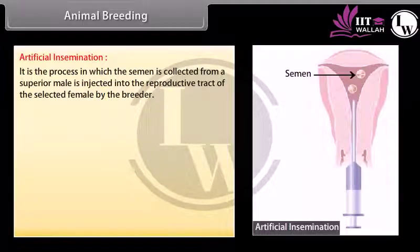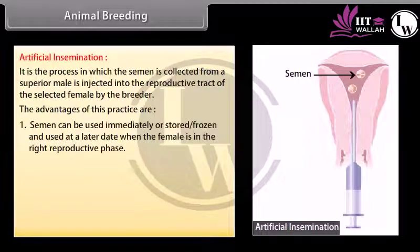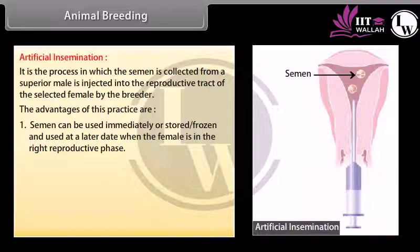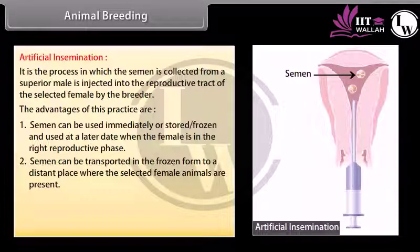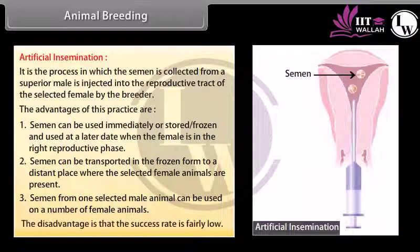Artificial insemination is the process in which semen is collected from a superior male and injected into the reproductive tract of the selected female by the breeder. Advantages: 1. Semen can be used immediately or stored/frozen for later use when the female is in the right reproductive phase. 2. Semen can be transported in frozen form to distant places where selected female animals are present. 3. Semen from one selected male can be used on a number of females. The disadvantage is that the success rate is fairly low.